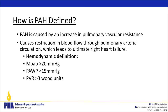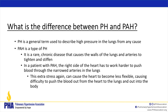What's the difference between PH and PAH? PH is a general term describing high blood pressure in the lungs. PAH is rarer and chronic, and the big difference lies in the specific hemodynamic numbers we measure. Both put extra stress on the heart.